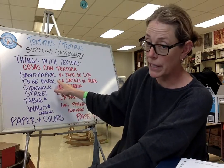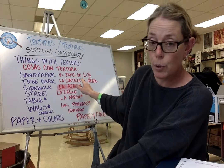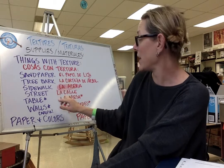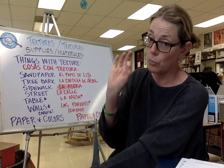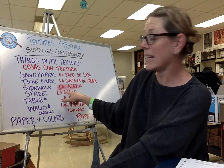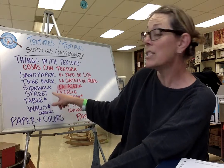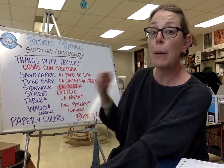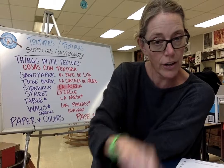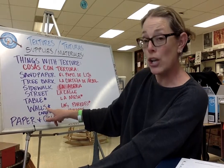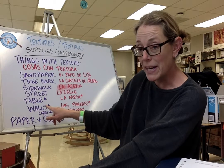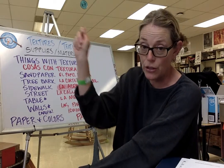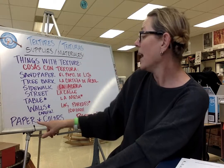Tree bark — la corteza del árbol — if it's not raining. Sidewalk — la acera — if it's okay. Street — la calle — mucho cuidado, be really careful if you go to the street. Your table might have a texture — la mesa — but be careful, don't get crayon on your mom's table. Walls — las paredes — again cuidado, don't get crayon on the walls.